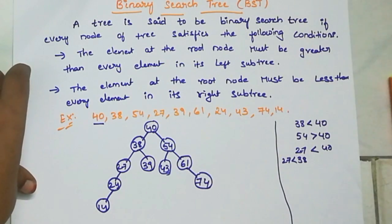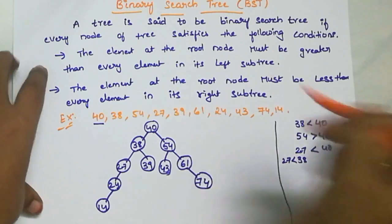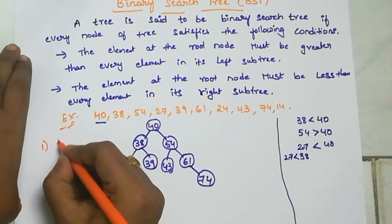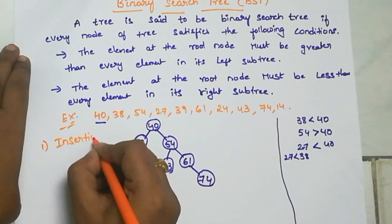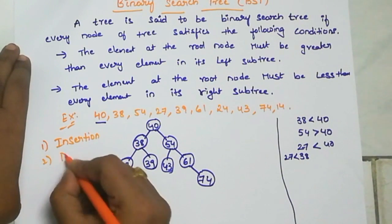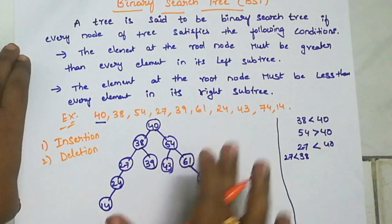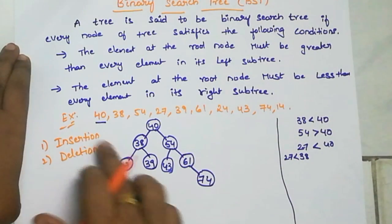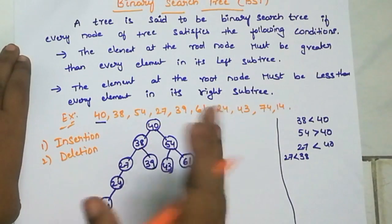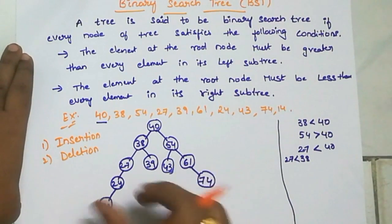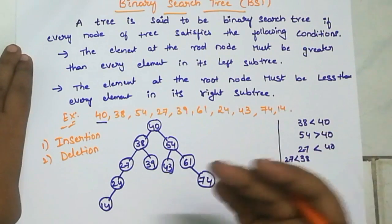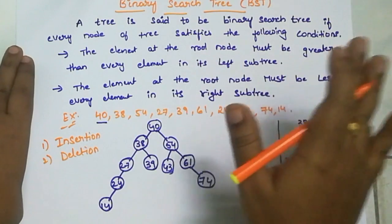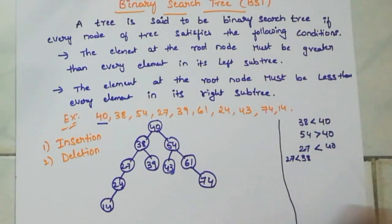So this is how we construct a binary search tree. In a binary search tree, there are two procedures: insertion and deletion. We have performed insertion — adding elements into the tree. For deletion, we need an already existing tree and we perform deletion on it. We will see deletion in the next video. This is the insertion of a binary search tree. Thank you.